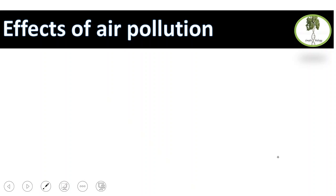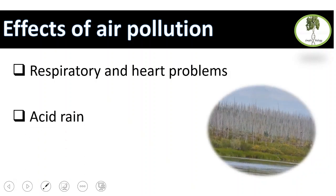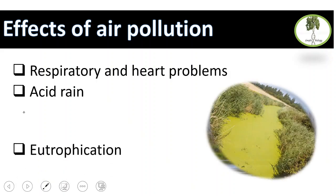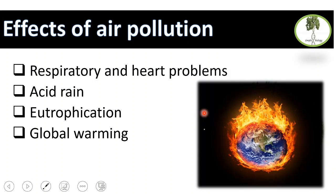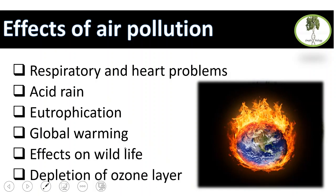What are the effects of air pollution? Effects on human health include respiratory and heart problems. Air pollution causes acid rain — sulfur dioxide and nitrogen oxides form acids. It causes eutrophication. Most importantly, greenhouse gases like carbon dioxide and methane trap heat around the Earth, increasing the average global temperature — this is global warming. There are also effects on wildlife and depletion of the ozone layer.